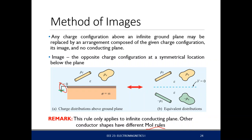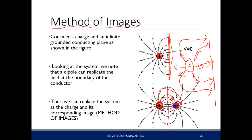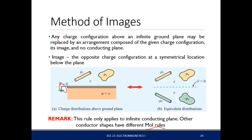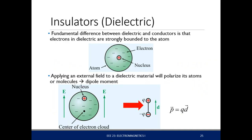If you introduce a conductor in a system of charges, it forces that region to be equipotential and disturbs the field paths. Now let's move on to another material: insulators, or dielectrics. The fundamental difference between dielectrics and conductors is that electrons are strongly bounded within the atom in dielectrics.